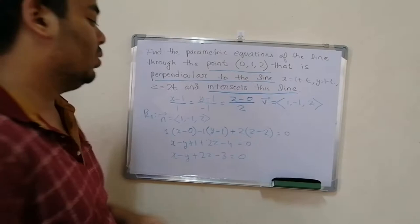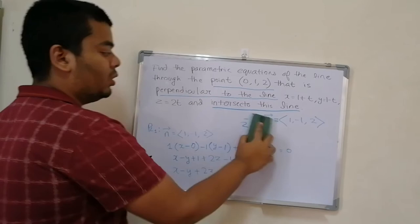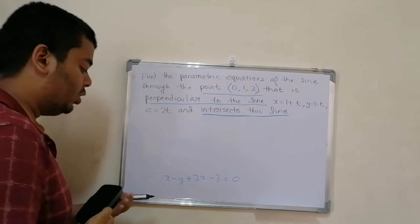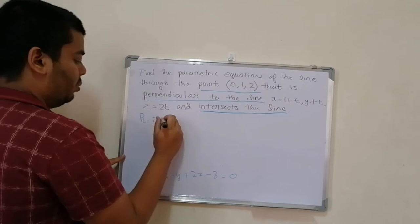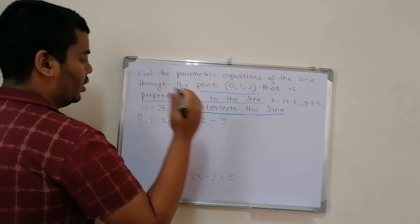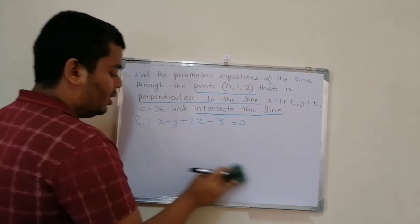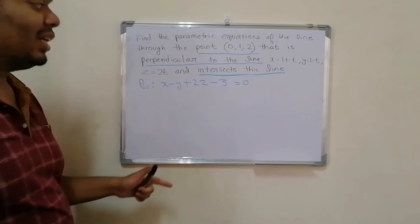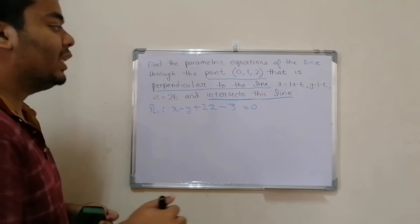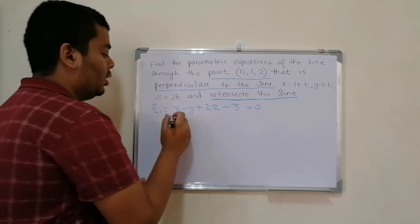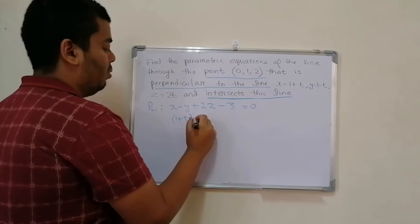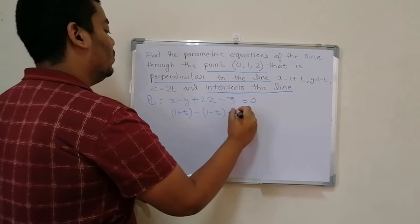The equation of plane PL1 is x - y + 2z - 3 = 0. Now, the line we want to find also intersects the given line. We plug the parametric values of the given line into the plane equation: (1+t) - (1-t) + 2(2t) = 3, which gives 1+t - 1+t + 4t = 3.